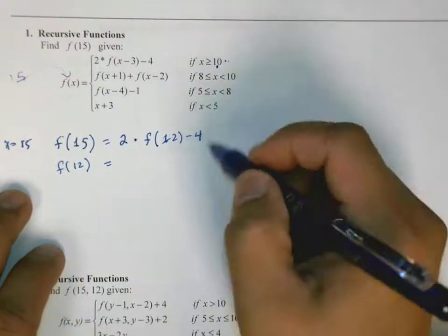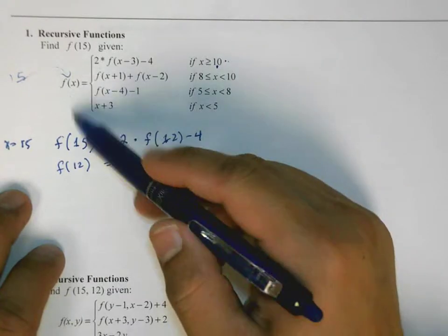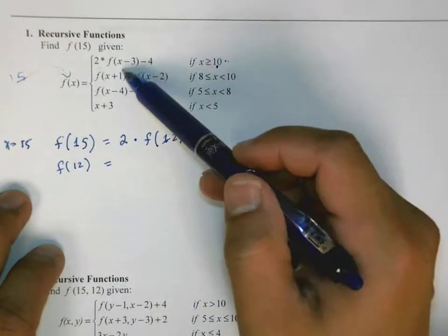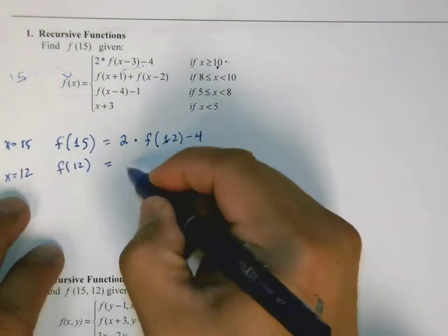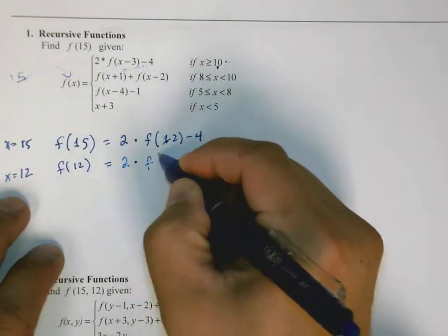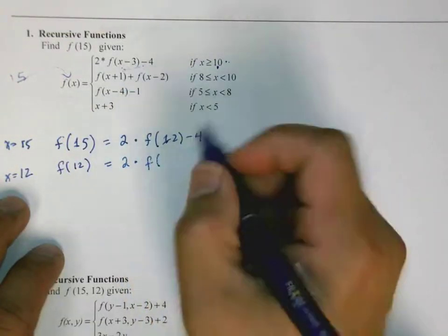Well, f of 12, we come into this function, and it hits this code again. So f of 12, at this point, x is equal to 12, so it's going to be 2 times f of 12 minus 3, which is 9, minus 4.